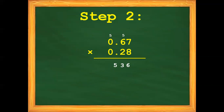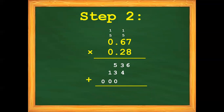Next, 2 times 7 is 14, bring down 4, carry 1. 2 times 6 is 12 plus 1 is 13, bring down 3, carry 1. 2 times 0 is 0 plus 1 is 1. Then 0 times 7 is 0, 0 times 6 is 0, and 0 times 0 is 0. Let's add: bring down 6. 3 plus 4 is 7. 5 plus 3 plus 0 is 8. 1 plus 0 is 1, and bring down 0.